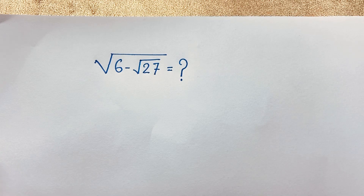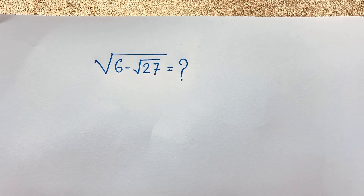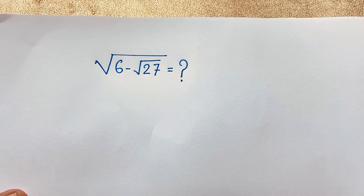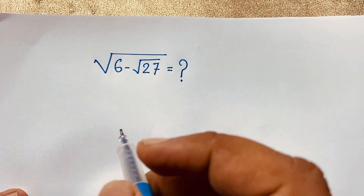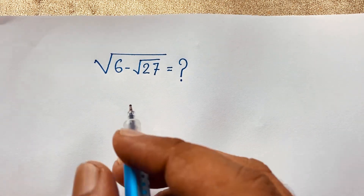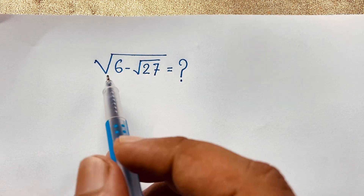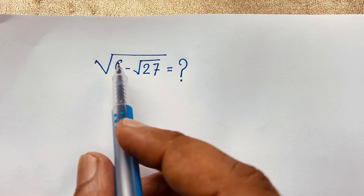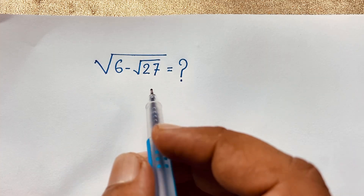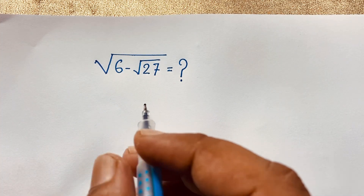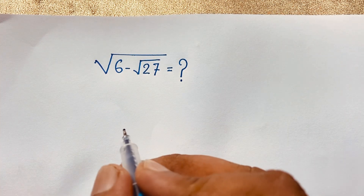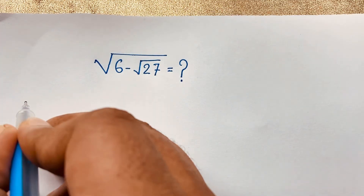Hello everyone, welcome to Rasha's Classroom. Today we have solved a nice radical math Olympiad question — a Japanese math Olympiad question. The question is: square root of 6 minus square root of 27 equals what? How do we simplify this radical math question?